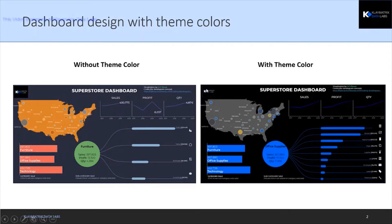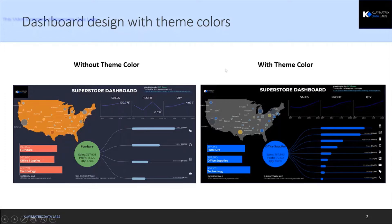The one on the right is highlighting the brand colors, while the one on the left doesn't look great because it has a lot of incoherent colors. The one on the right has a specific theme color derived from the logo and it goes really well with the underlying brand philosophy.